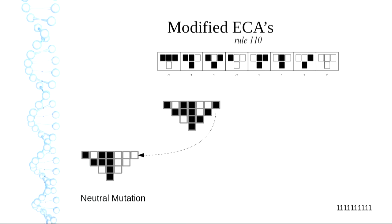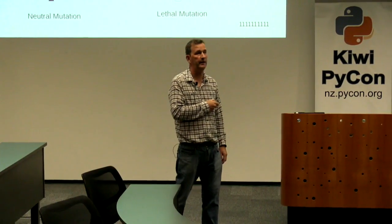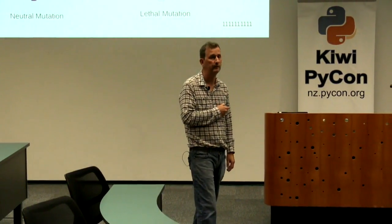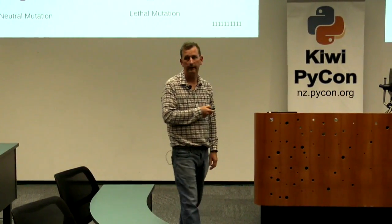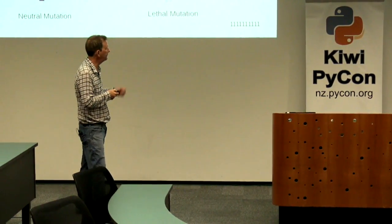Or I could switch another bit and make it a one — this propagates down and sets the indicator bit to zero. That's a lethal mutation — it's just killed it. So now I can have an arbitrary rule and an arbitrary genome and I can see if it's alive or dead.